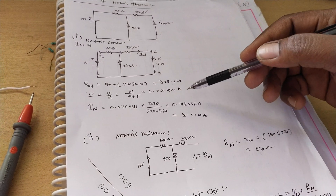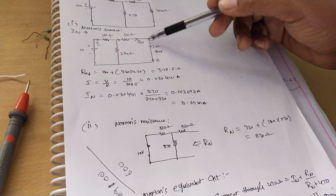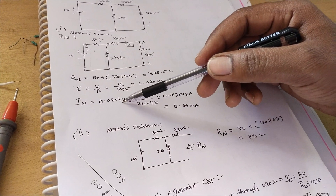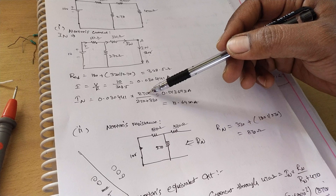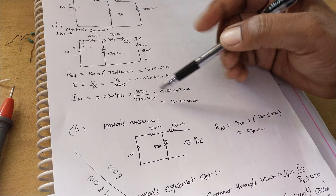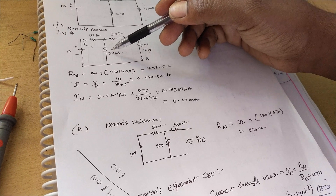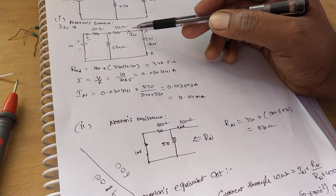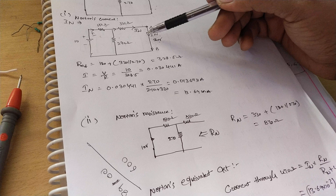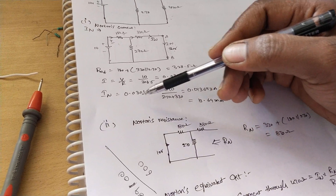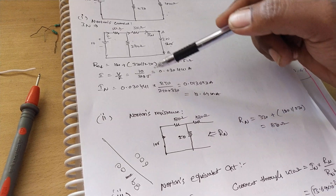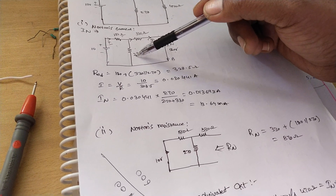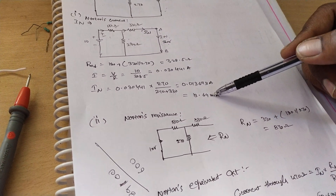Norton's current through the 330 ohm resistance is calculated using the current division rule: total current 0.0341 amps (30 milliamps) multiplied by the opposite resistance 270, divided by 270 plus 330. The opposite resistance for 330 ohm is 270 ohm. That gives Norton's current of 13.69 milliamps.